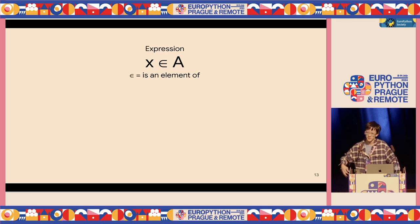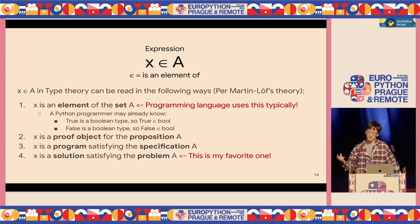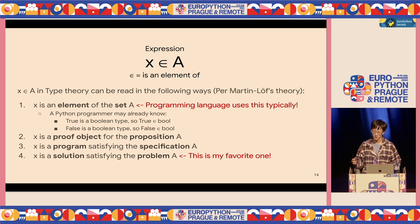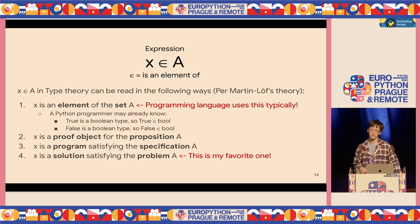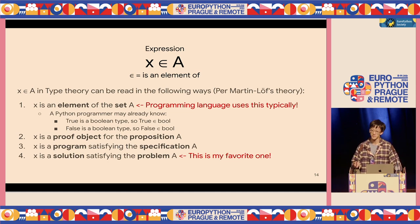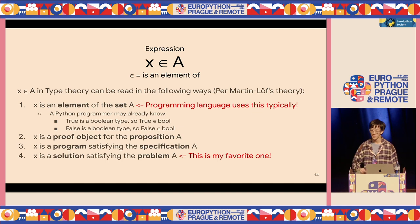Look at this expression: X is an element of A. In type theory, Per Martin-Löf — one of the original type theory founders — used four ways to interpret this. First: X is an element of the set A. In programming, you'd say true is a boolean, so true is an element of the boolean type. Other interpretations include: X is a proof object for proposition A, X is a program satisfying specification A, and X is a solution satisfying problem A.